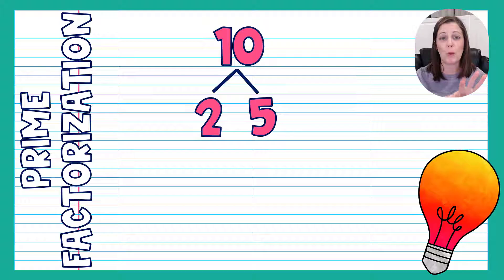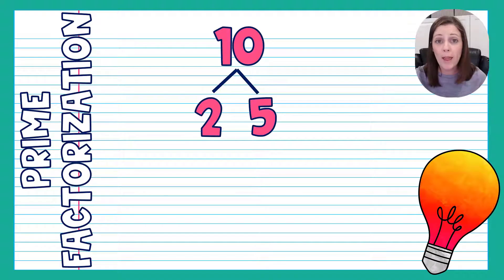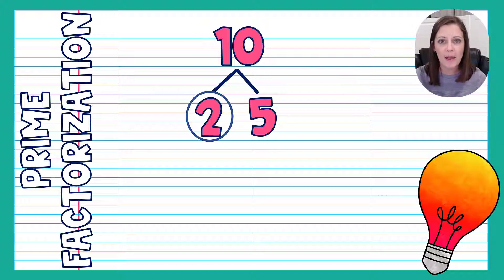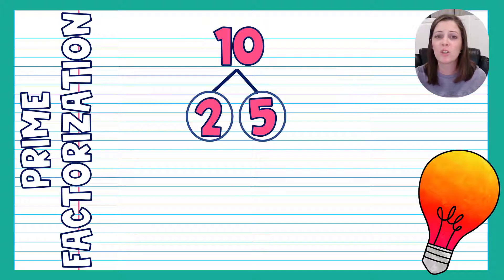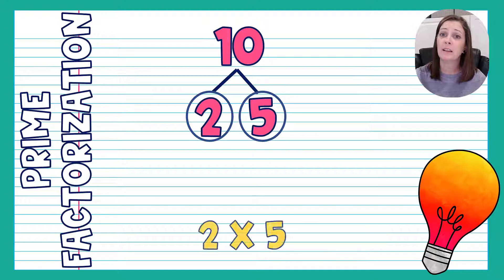Now I look at each branch separately. Starting with 2: is it prime or composite? Two is a prime number — the only way to get it is 1 times 2, and since we don't use 1, we can't break 2 down. That branch is finished, so I circle it. Then I ask the same question about 5: is 5 prime or composite? Five is a prime number — the only way to get it is 1 times 5. It cannot be broken down, so I circle it. All branches are circled, so I have my prime factorization: 2 times 5.